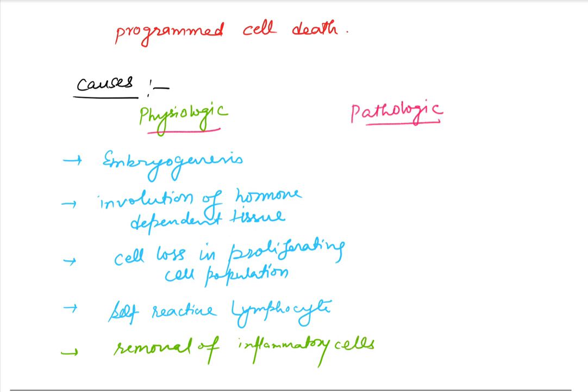Talking about pathologic situations: the most important is DNA damage. This condition arises because the cell cannot repair itself — irreversible injury has occurred to the cell and the cell is destined to die, with DNA damage being one of the most important situations.